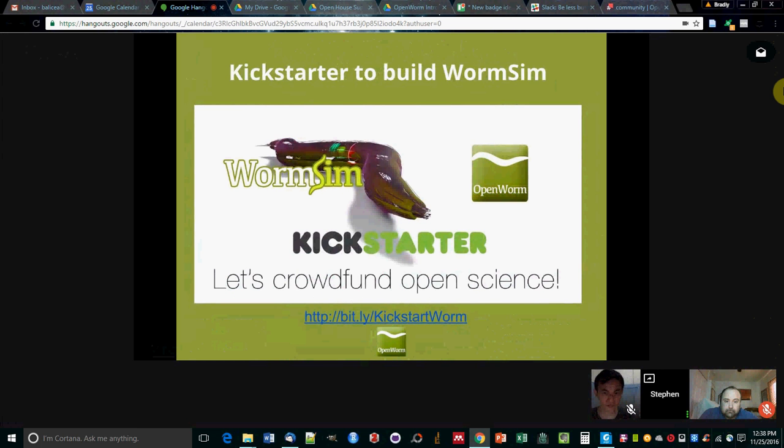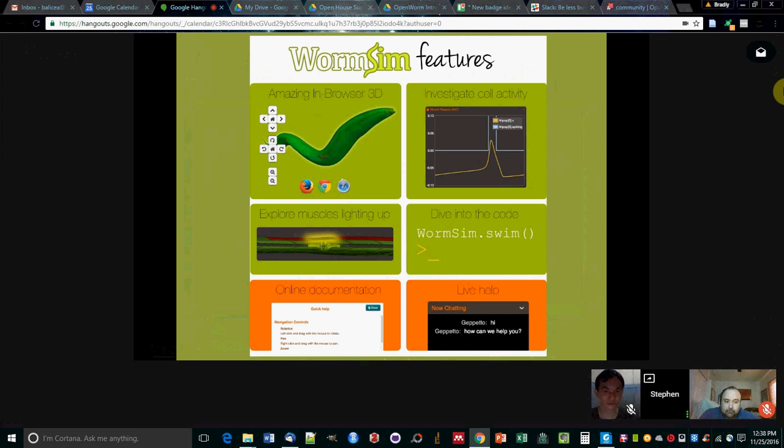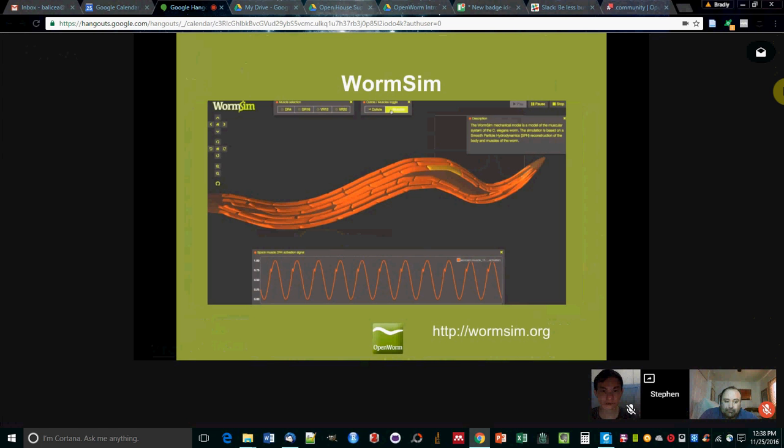And so I mentioned WormSim, so that was the result of what we did in the Kickstarter. You can go check that out also at WormSim.org. And basically what it lets you do is to not only play with a static version of the anatomy of the worm, but also drill in and see different cell activity, see muscles lighting up, play around with some code, and have some documentation. It's pretty great. This is what it looks like when you get into it.